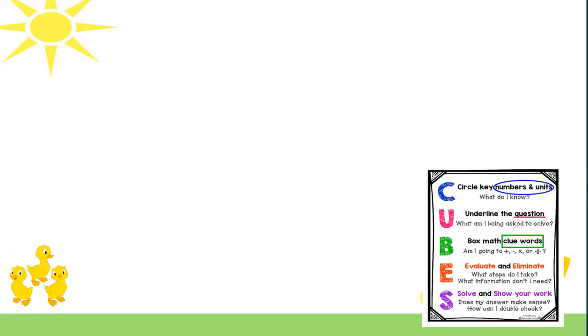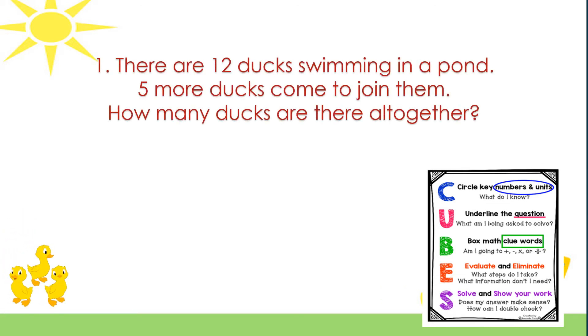Let's read problem one. There are 12 ducks swimming in a pond. Five more ducks come to join them. How many ducks are there all together?